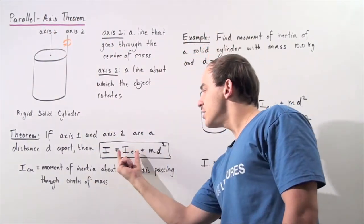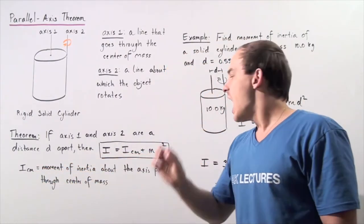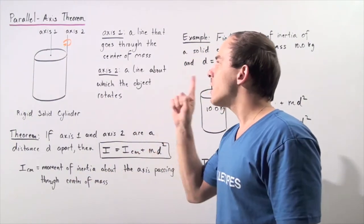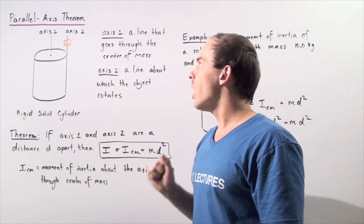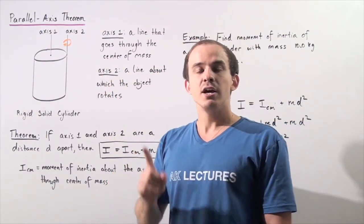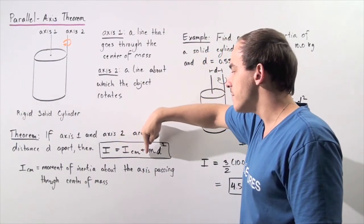Once again, this quantity is simply the moment of inertia about the axis passing through the center of mass. If our object was instead rotating about axis number one and not axis number two, then we can simply find the moment of inertia of the object by simply using I_CM.